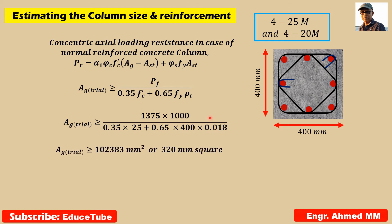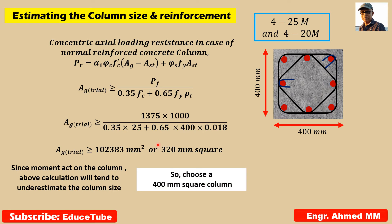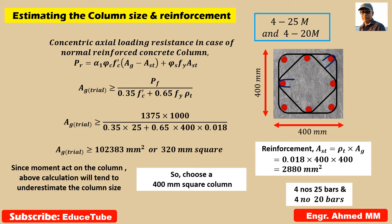So what I get? Very easy: 102383 millimeter square, equivalent to 320 millimeter square. But here I wrote something: since moment acts on the column, this calculation will tend to underestimate the column size, so it's better to go for a higher size, say 400 millimeter square column. So once I get this size, I can find the steel reinforcement. Here I got 400 by 400, 0.018, 2880. So as I need even numbers, I choose 4 numbers 25 bars and 4 numbers 20 bars.